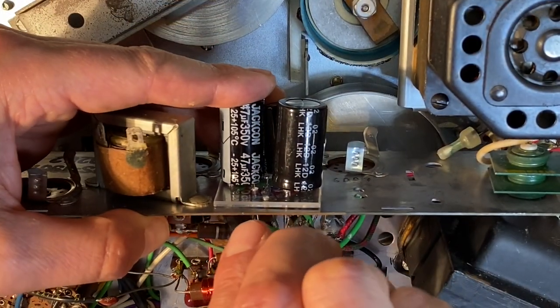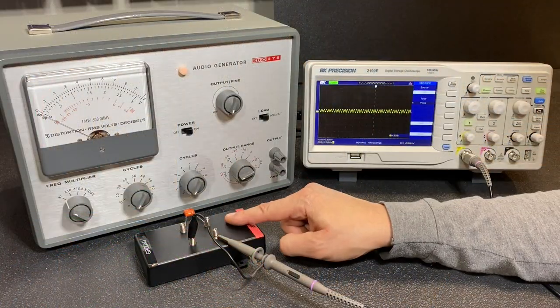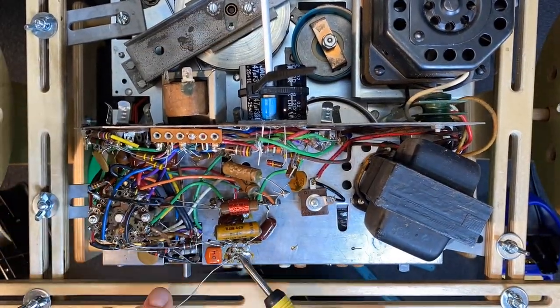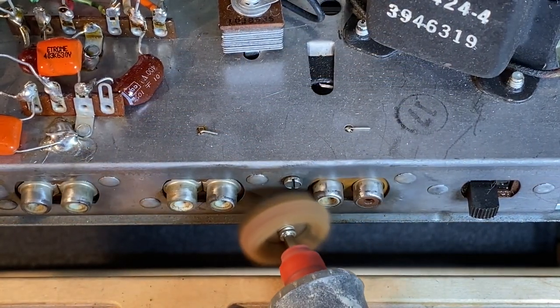In this episode I'll show my new method to replace multi-section filter capacitors and a unique way I find the foil side of capacitors. We'll replace the wax paper caps, test and replace faulty resistors, remove corrosion from the RCA jacks,